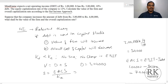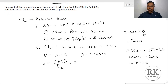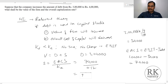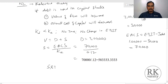So earnings available to common shareholders is 70,000. The equity capitalization rate is 12%. Therefore, the market value of equity S equals 70,000 divided by 0.12, which gives 5,83,333.